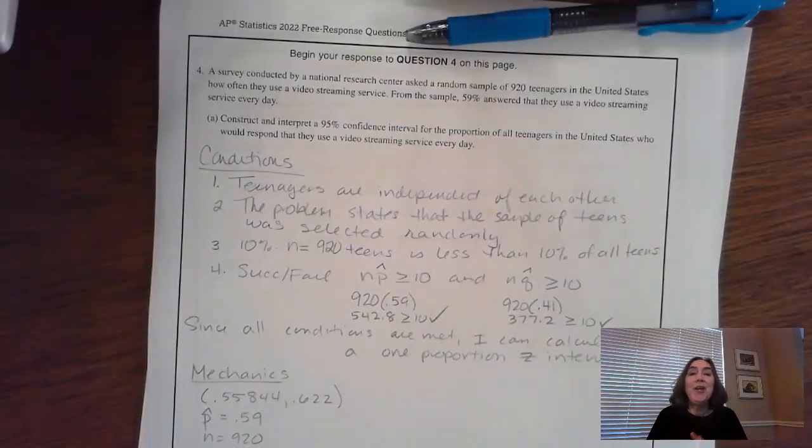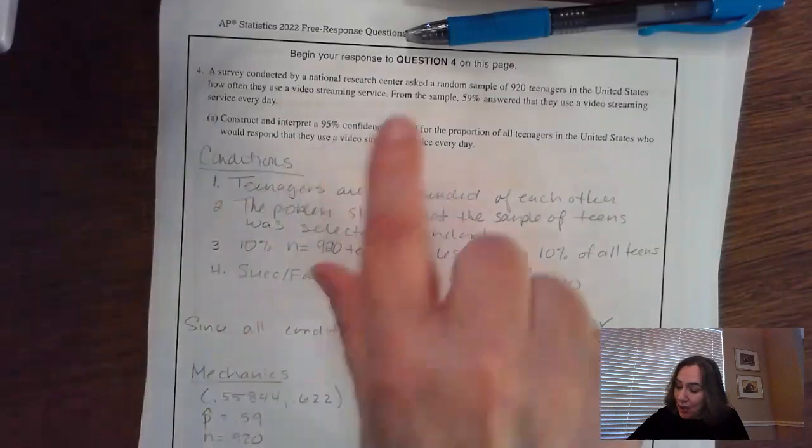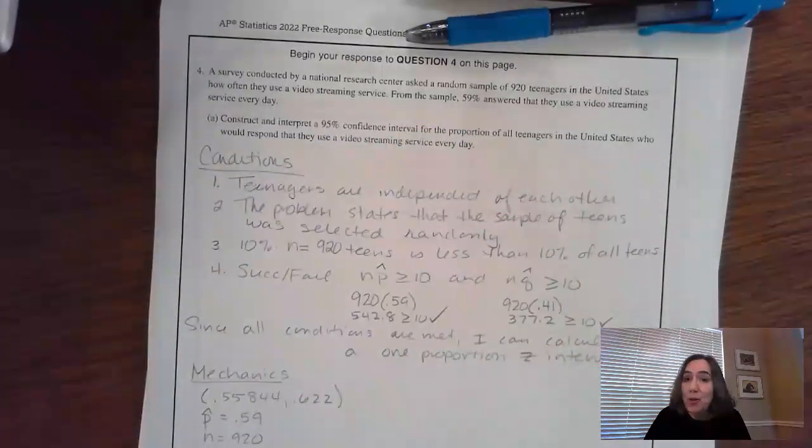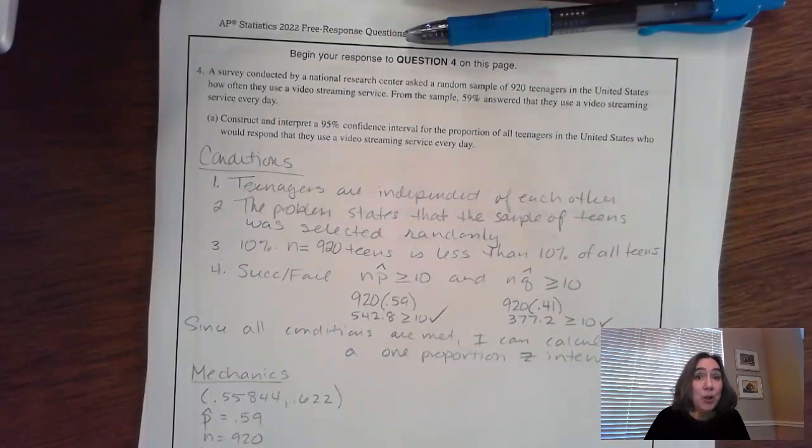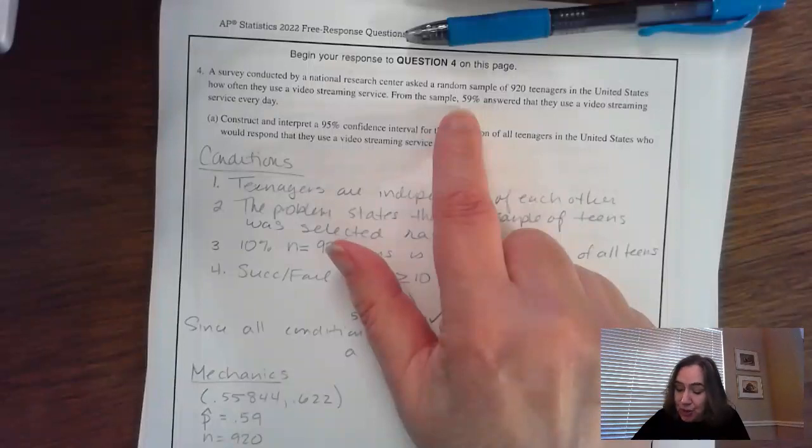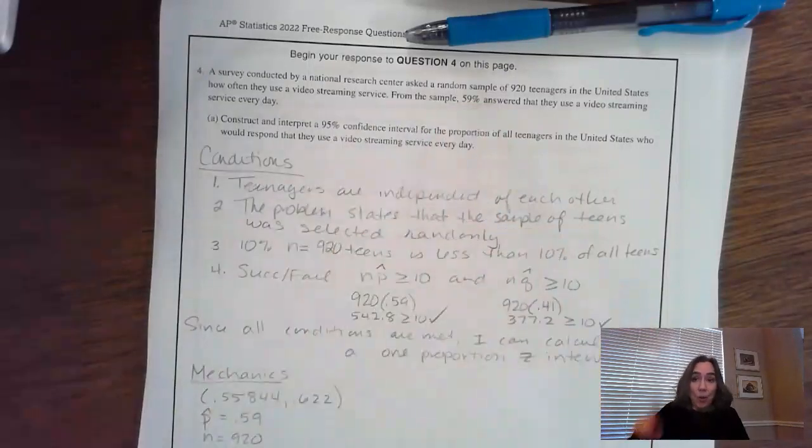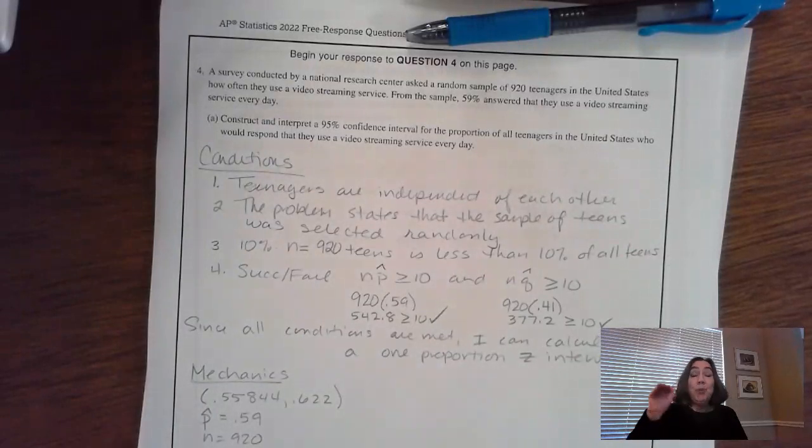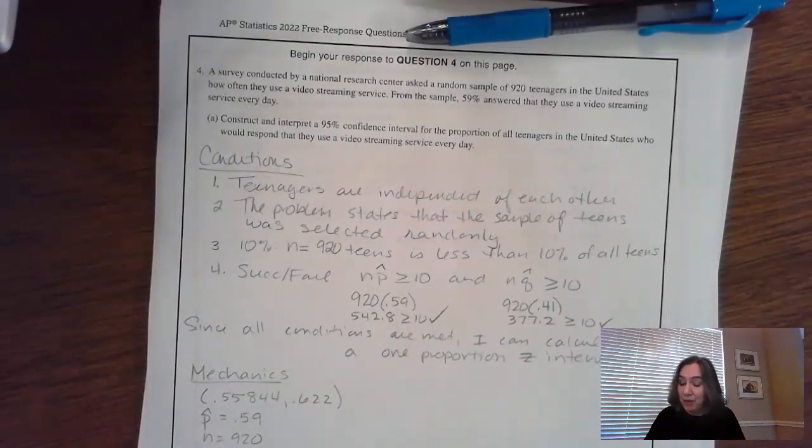Welcome stat students. We're going to grade the 2022 question number four free response. It is about a random sample of 920 teenagers who were asked about how often they use video streaming services. They tell us that 59% of that particular sample answered that they used it every day. So I have one sample, a ratio proportion percent about that one sample, and that's some important information for me.